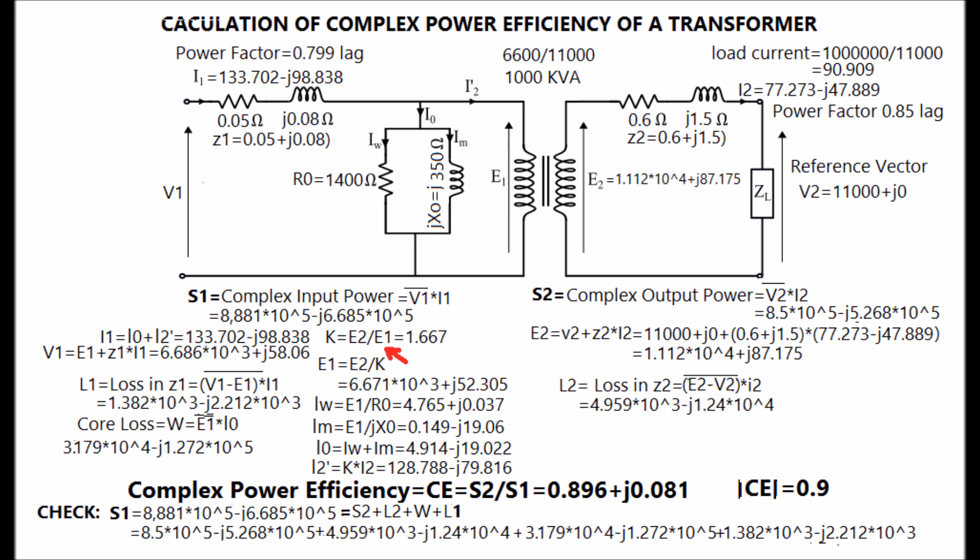The turns ratio E2 by E1 as shown in the diagram is calculated as 1.667. Capital E2 is calculated by adding the voltage drop in the impedance Z2 with the output voltage V2 as shown in the diagram. E1 can be calculated as E2 by K.